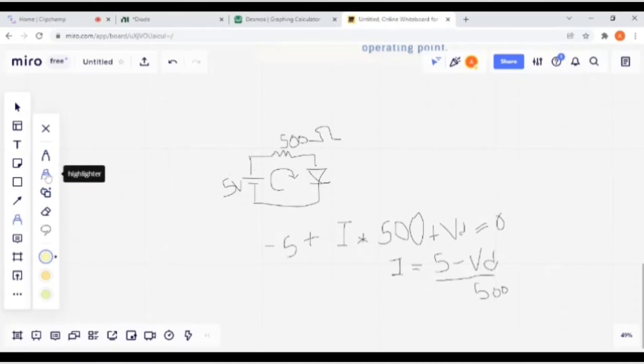Let's change the value. Now here is 10 volts. Write 10 volts here in KVL equation. Similarly, in current equation, we get the current equation: I is equal to 10 minus VD divided by 500. Now plot this equation in the calculator.